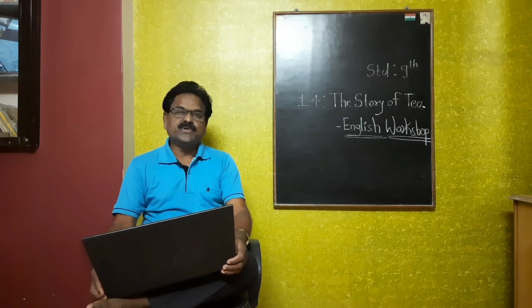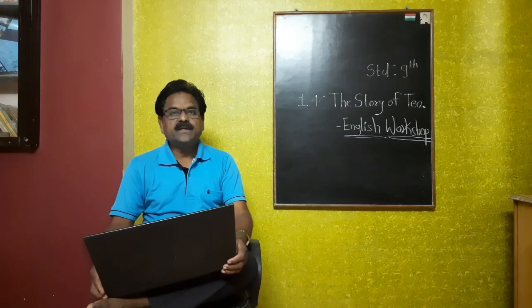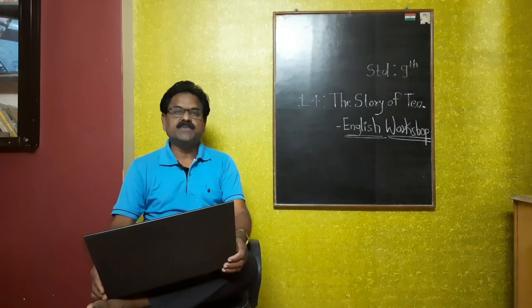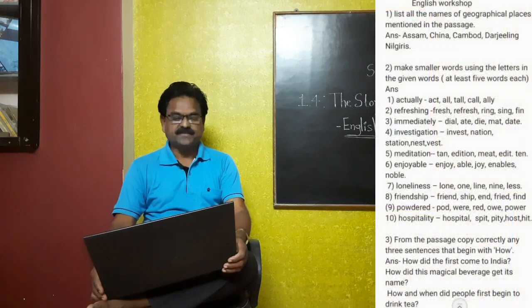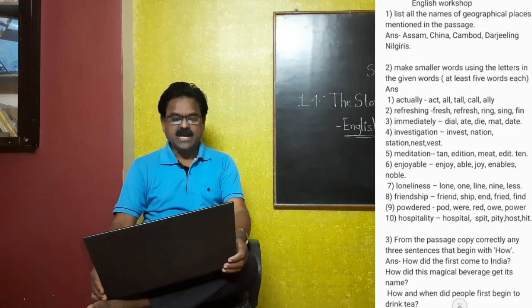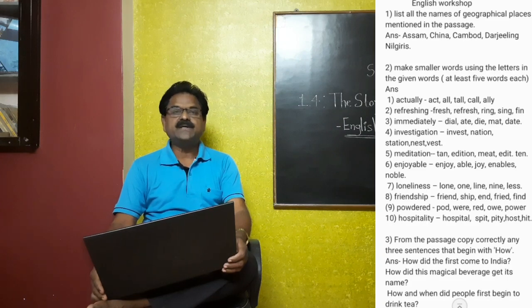Now we are going to learn the English workshop. Question number one: list all the names of geographical places mentioned in the passage. Assam, China, Cambodia, Darjeeling, Nilgiris.